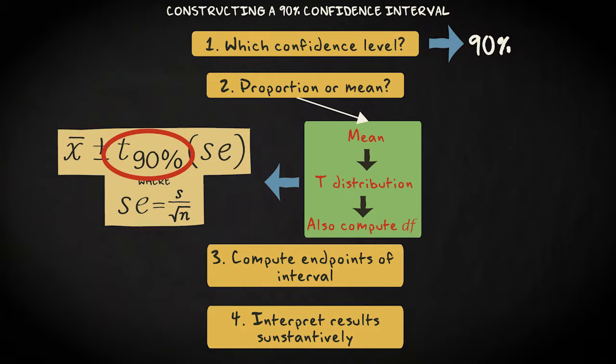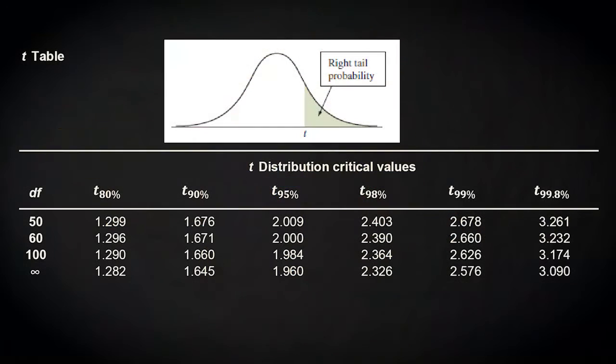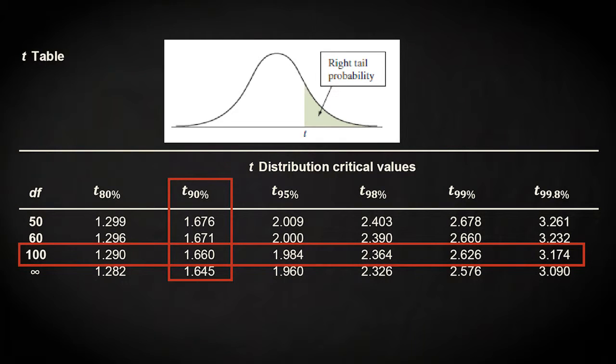So the next step is to look up the relevant t-score. To do that, we should first know the degrees of freedom. That's n minus 1 equals 150 minus 1 equals 149. So in the t-table we look in the column of the 90% confidence level and in the row of 100 degrees of freedom.